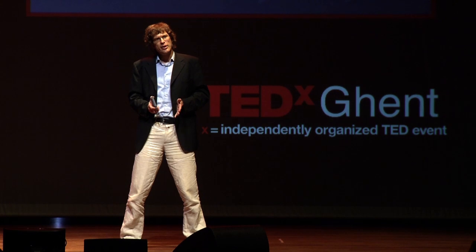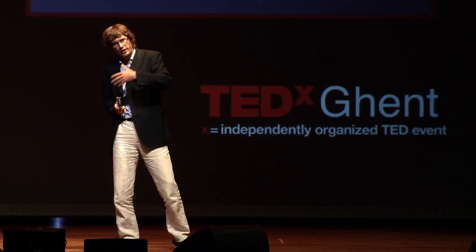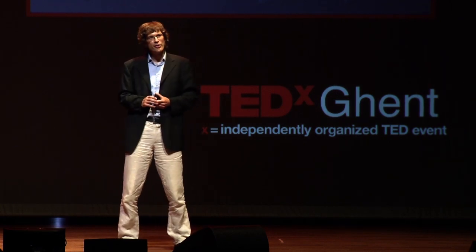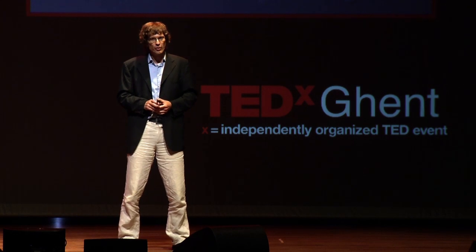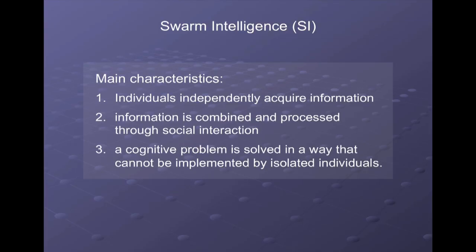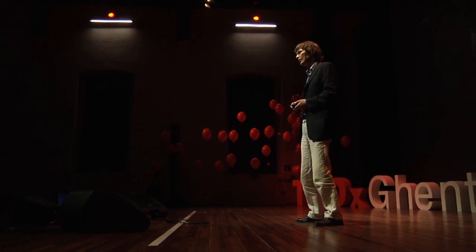I've explained how collective behavior works and gave examples of swarm intelligent behavior — the clever fish that ignore the bad leader — but also swarm stupidity, people walking into traffic. The question is how we get swarm intelligence. Three criteria: first, individuals need to independently collect information in their environment; second, they need to interact with each other, or through an algorithm; and third, this interaction needs to provide a solution to a cognitive problem that could not be implemented by isolated individuals.